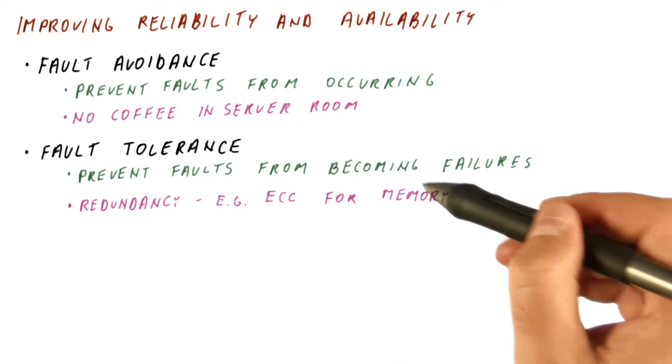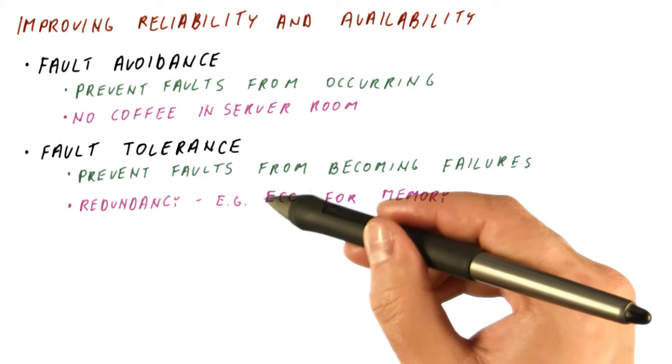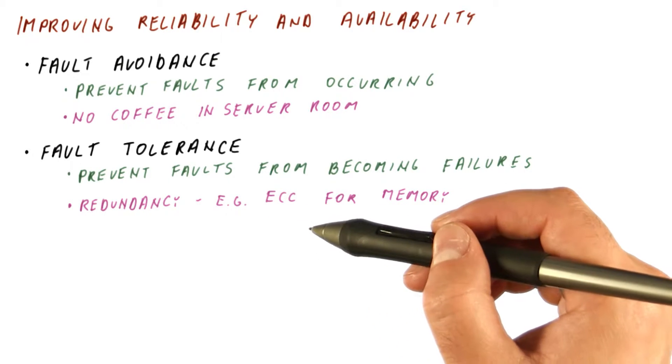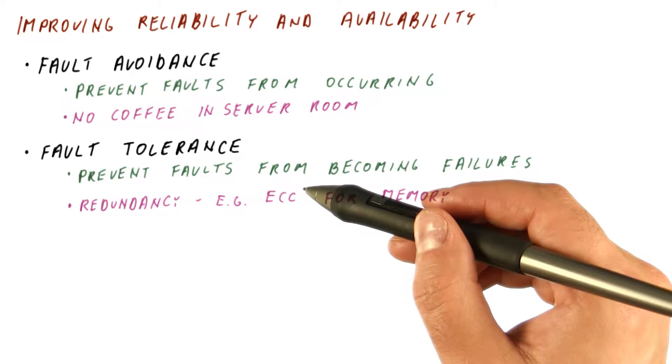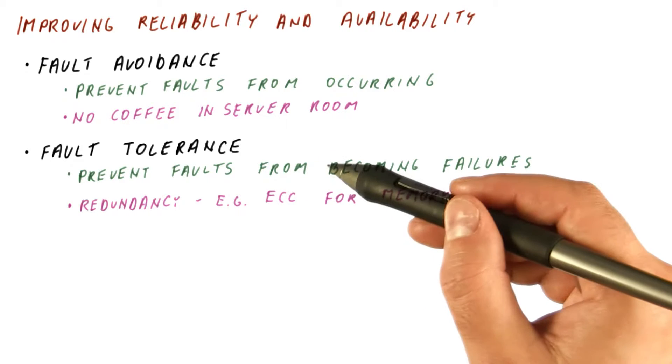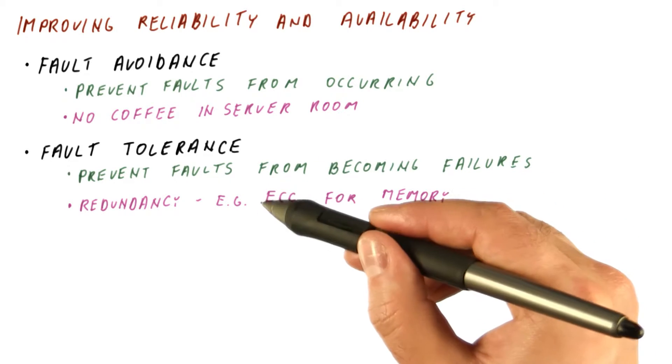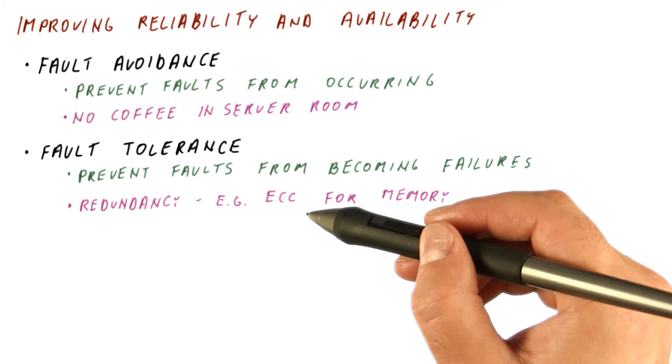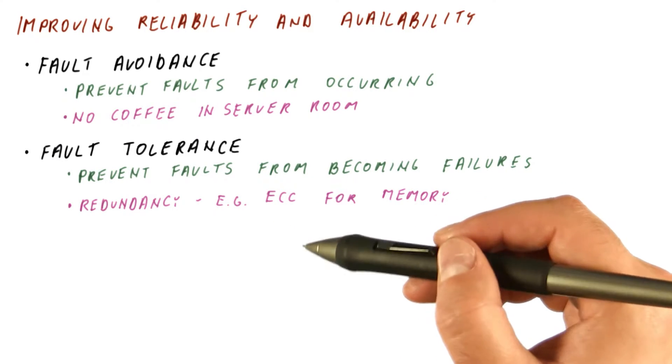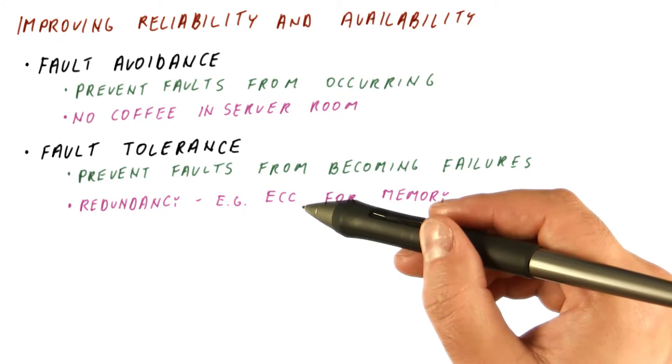For example, ECC can be used for memory, and ECC stands for Error Correcting Code. So what happens is, if there is a fault, for example, a particle strike that flips a bit in memory, ECC will allow us to read that block from memory, realize that one of the bits has been flipped, and actually correct that bit.